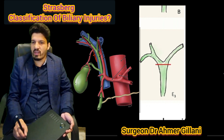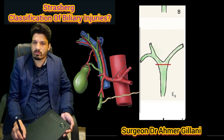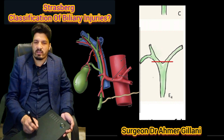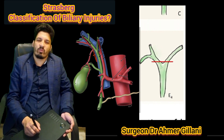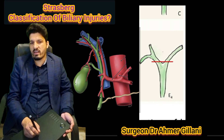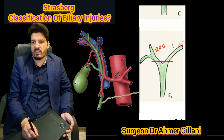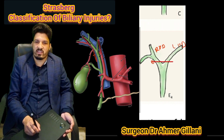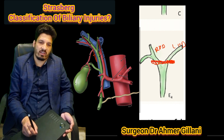After that, we have E4. This injury involves the confluence, and the right hepatic duct and left hepatic duct are separated from each other — so exactly at this point, it is involving the confluence.